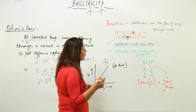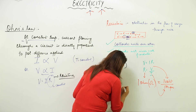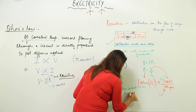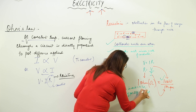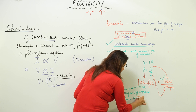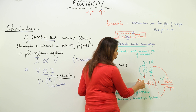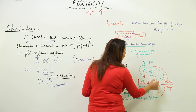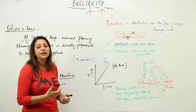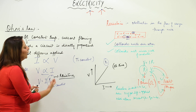We can define the unit formally: resistance is said to be 1 ohm when 1 volt of potential difference is applied and it allows 1 ampere of current to flow through the wire. This is how the SI unit of resistance — the ohm — is defined.